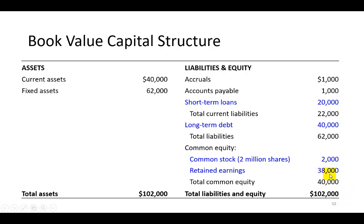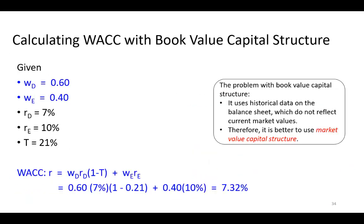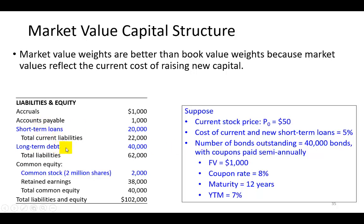Likewise, this stock may be selling at a radically different price today than when the firm first issued it. We must remember that the essence of cost of capital estimation is to obtain a cost reflecting what it currently costs to generate debt and equity capital today. Therefore, we should use market value capital structure. For example, let's say the stock is currently selling for $50, and the short-term debt rate hasn't changed — still at 5% — so its value stays at $20,000, since short-term debt has maturity of less than a year.